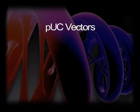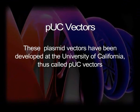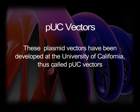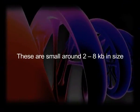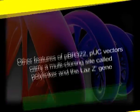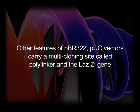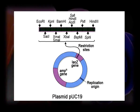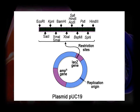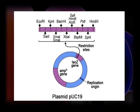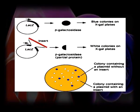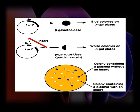pUC vectors have been developed at the University of California, thus named as pUC — P for plasmid, U for University, C for California. These are small vectors, around 2 to 8 kilobases in size, and are high copy number plasmids. Besides other features of pBR322, pUC vectors carry a multi-cloning site called a polylinker and the lacZ gene. A polylinker contains several restriction sites so that the gene of interest can be fitted within any restriction site. The lacZ gene helps in selection of recombinant cells against non-recombinant cells.